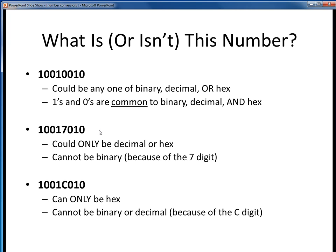This second number is still ambiguous, but a bit less so. Because of this 7 digit, we know it can only be decimal or hex, because binary only has ones and zeros. But we still need some more specifics to determine decimal or hex. This last number is completely unambiguous. It has to be hex, because neither binary nor decimal has this C digit.